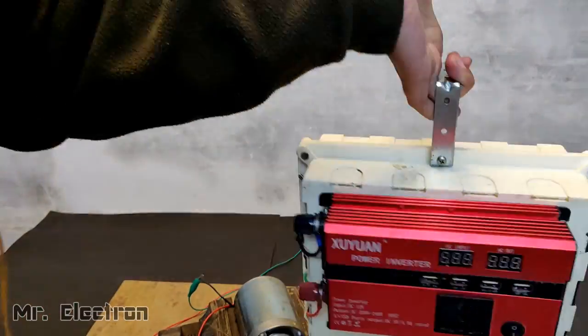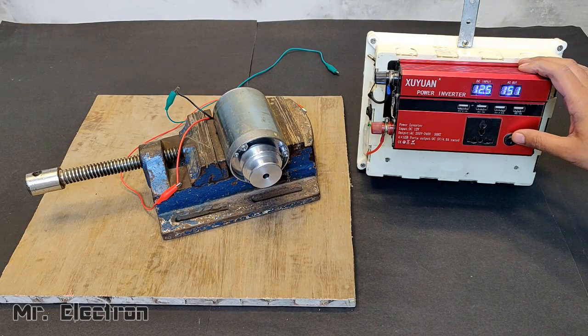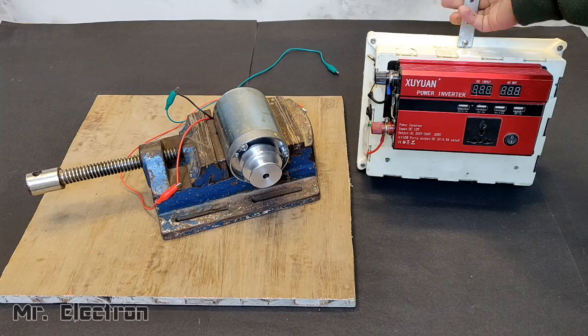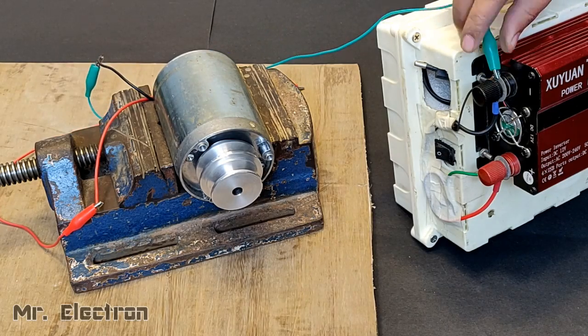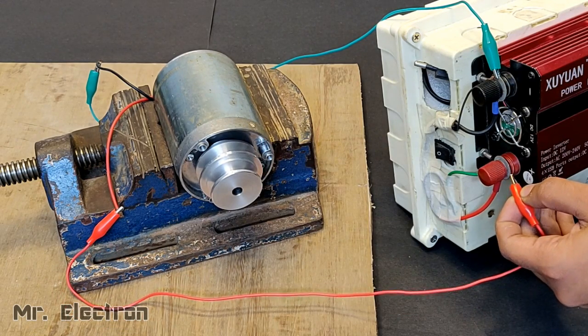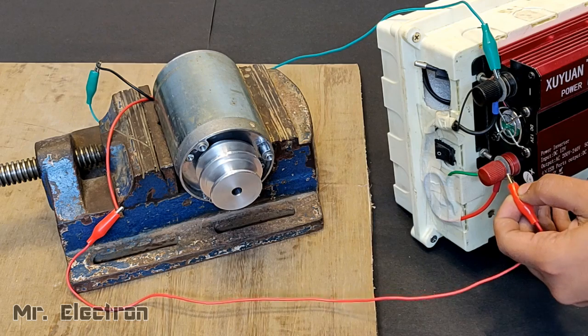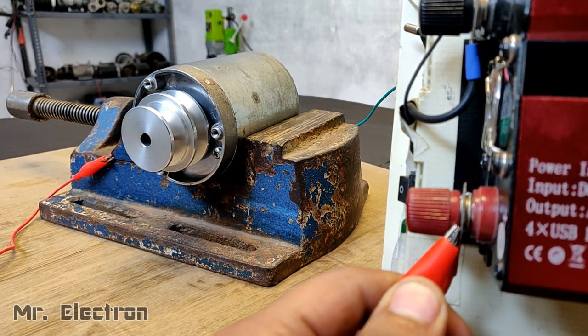Now guys, this is the mini UPS that I made in my previous video. It also has a 12 volts DC output with which I am going to run this motor first. You can see that it is running the motor and hence proving that the motor is a DC motor again.